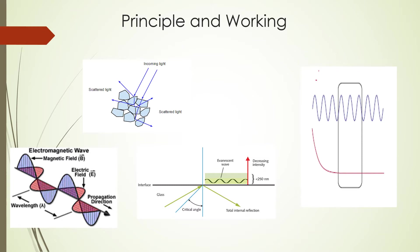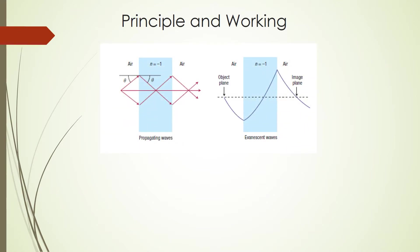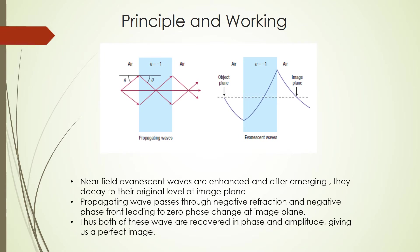But if a lens made of negative index metamaterial is placed close to an object, the near field evanescent waves can be strongly enhanced across the lens. After emerging from the NIM lens, the evanescent waves decay again until their amplitudes reach their original level at the image plane. The propagating waves pass through the NIM lens with both negative refraction and a reverse phase front, leading to zero phase change at the image plane. By completely recovering both propagating and evanescent waves in phase and amplitude, a perfect image is created.